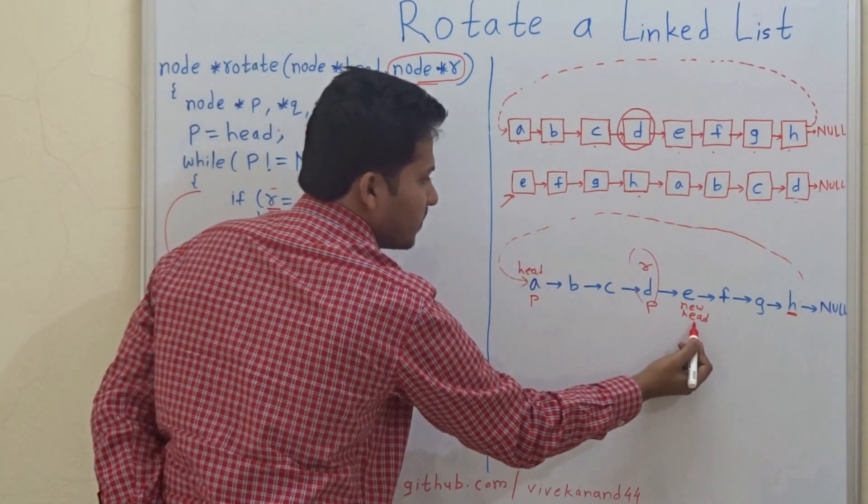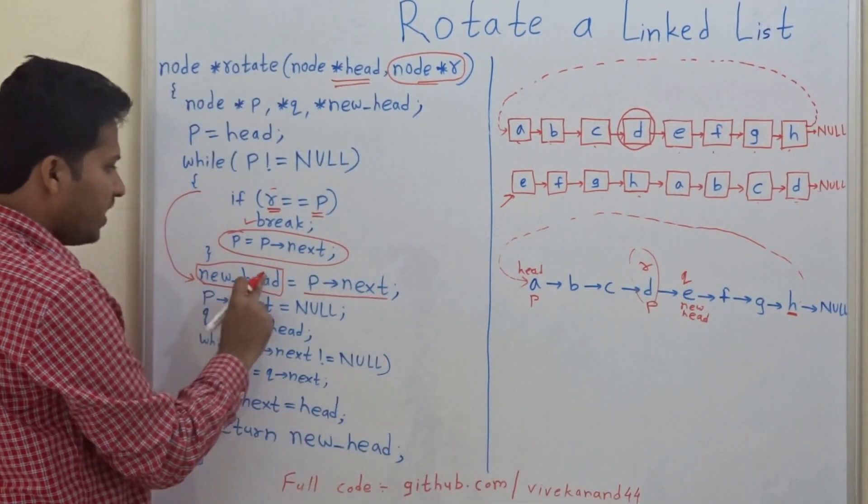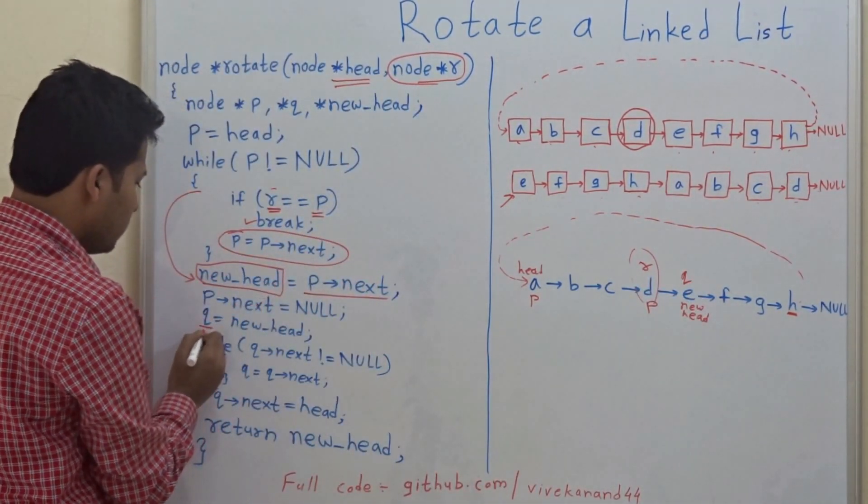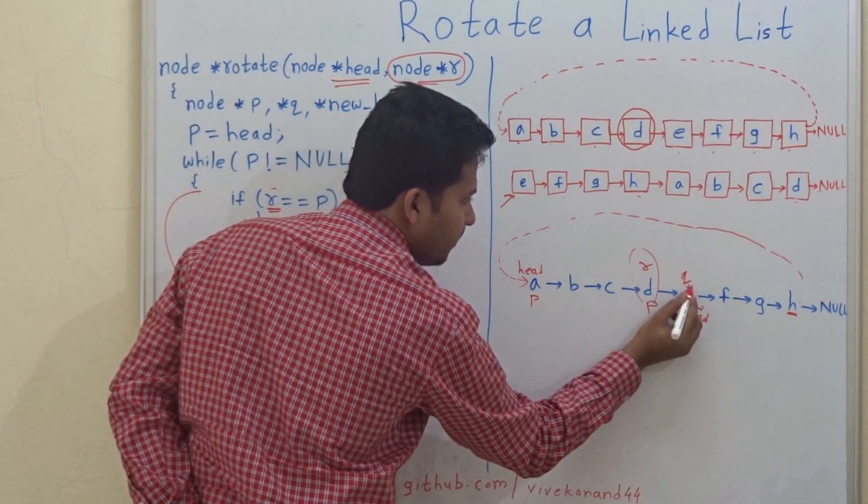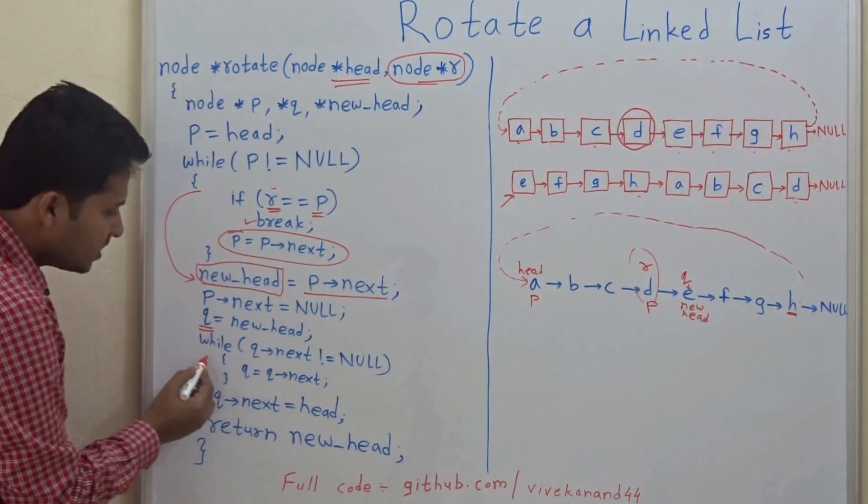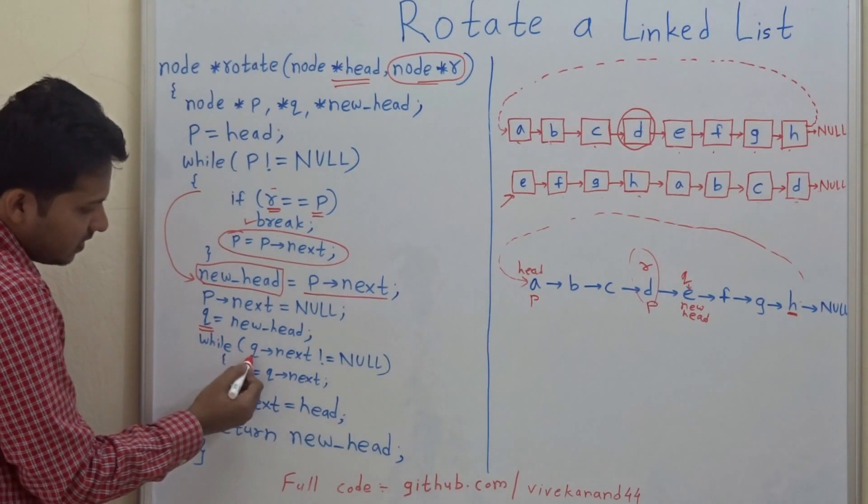So we point this node, that is the new head, to Q. Q is the pointer which will point to E. And again in this while loop, we will reach to the end of this linked list.